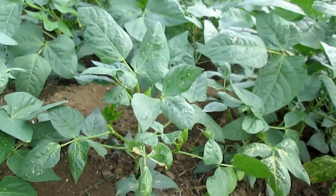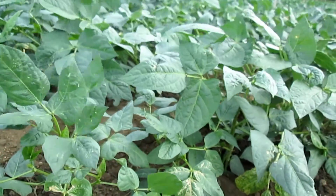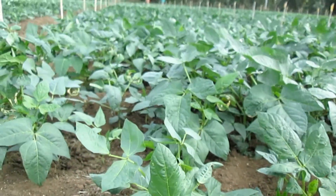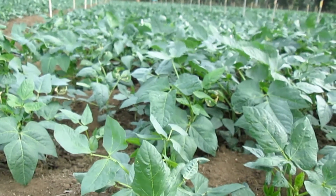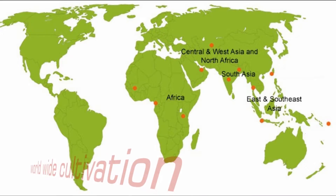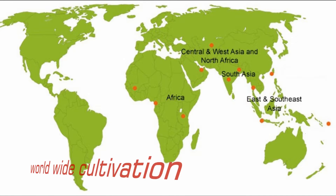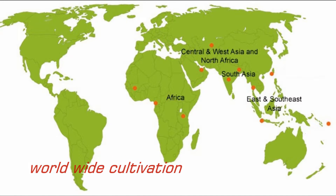14.5 million hectares of land is planted to cowpea per year, with dried cowpea production of 5.5 million metric tons worldwide. Cowpea cultivating areas include Africa, Asia, Europe, US, Central America, and South America.